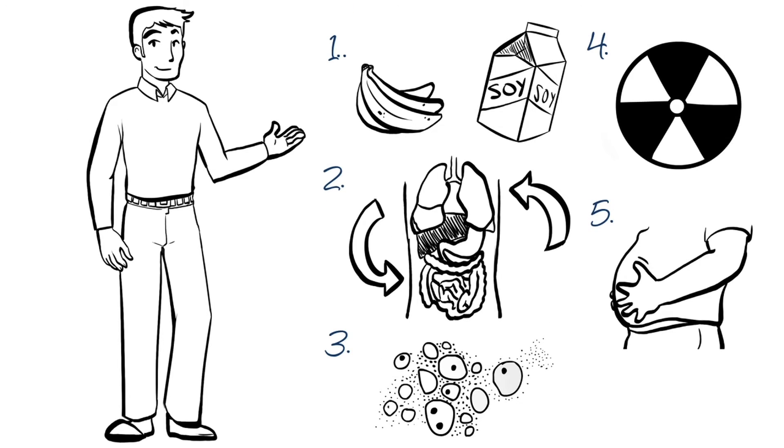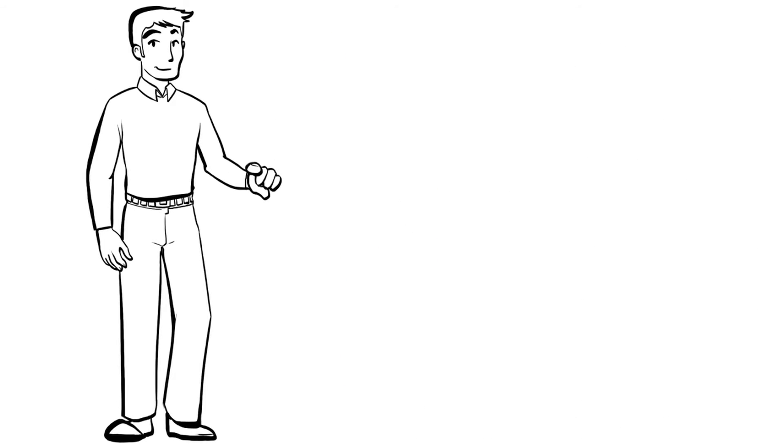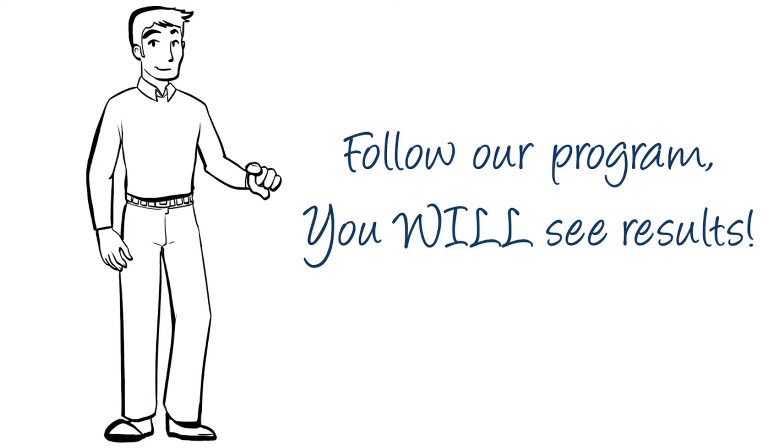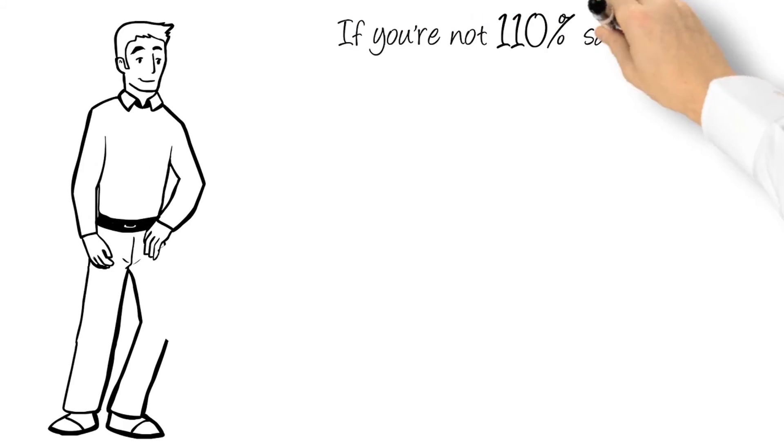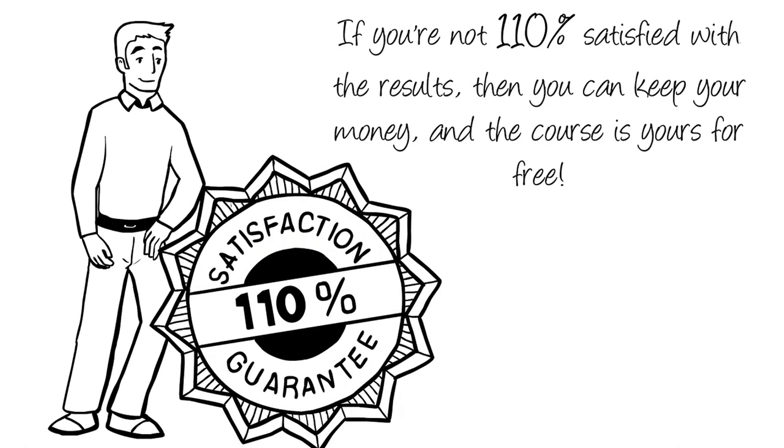Look, can I guarantee that you'll get the exact same results as these guys? No, of course not. Not everyone will actually follow the steps that we've outlined in the program. This is something that we cannot control. Also, results may vary depending on age and health status. However, I can absolutely guarantee the following two things. First, if you follow our program, then you will see results. Heck, they could even be better than the ones that we've seen in this presentation. Second, if you're not 110% satisfied with the results, then you can keep your money. And the course is yours for free.